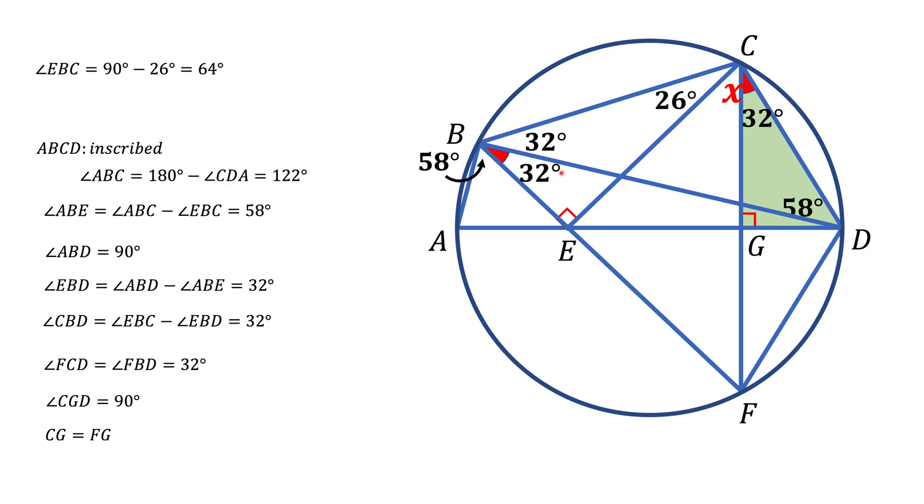The third way to show that G is the middle of segment CF is to look at this 32-degree angle here. This is an inscribed angle intercepting arc DF. Look at the top 32-degree angle, which also intercepts arc CD. Since these inscribed angles are congruent, the arcs they intercept are also congruent.